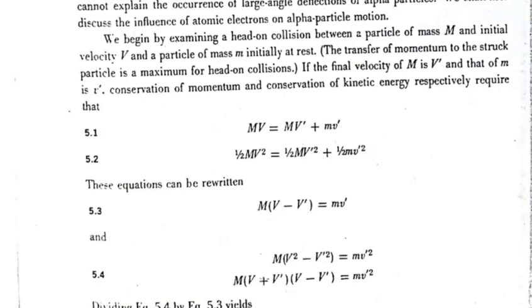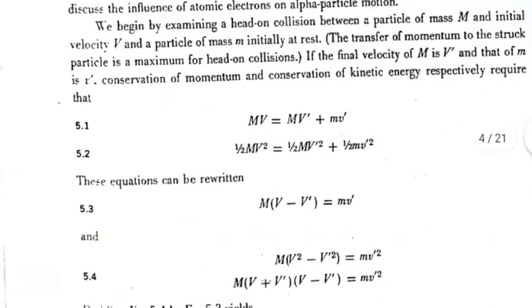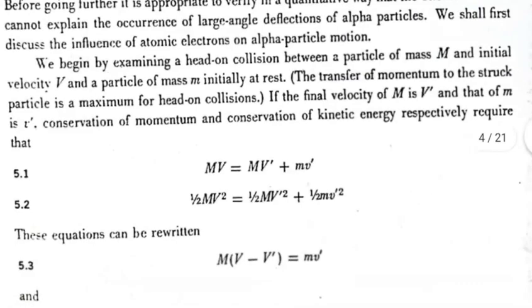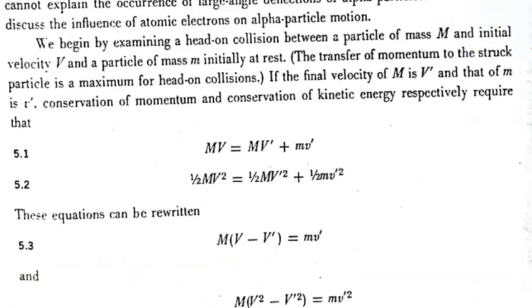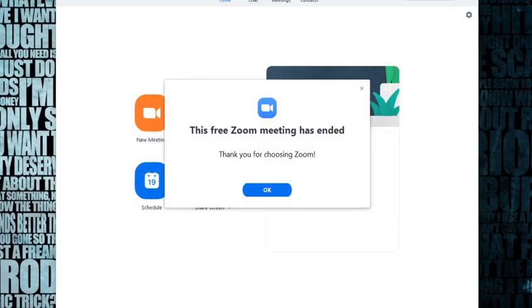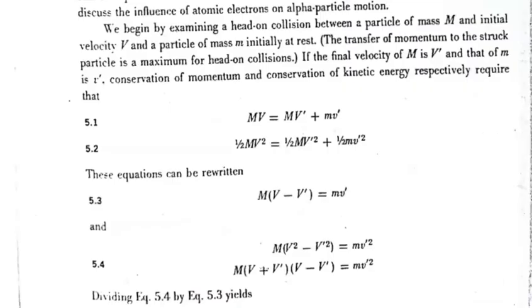Let's suppose that capital M is the mass of the alpha particle and capital V is the velocity of the alpha particle. Small m is the mass of electron, which is initially at rest.